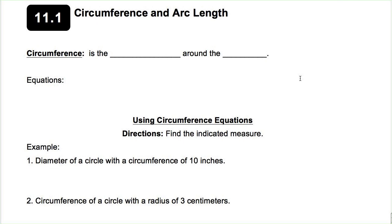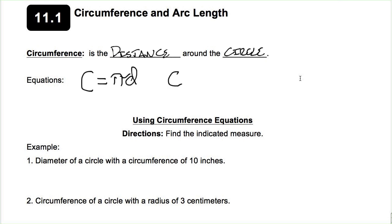Some of this you're going to know. The circumference is the distance around the circle — it goes around the outside. We have two different equations: the circumference is equal to pi times the diameter, or the circumference is equal to 2πr. You can use either one of those equations; it's always going to be the same thing.